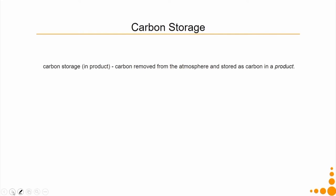Regarding carbon storage, this refers to when carbon is removed from the atmosphere and stored as carbon in a product. Related terminologies include greenhouse gas source — a source that produces greenhouse gases — and greenhouse gas sink — a place, activity, or product that absorbs greenhouse gases. For example, a forest is a greenhouse gas sink, while a factory is a greenhouse gas source.